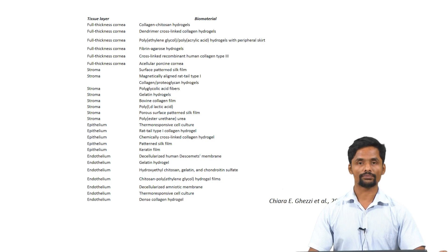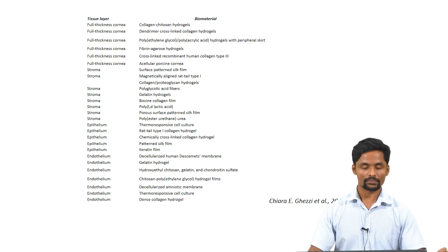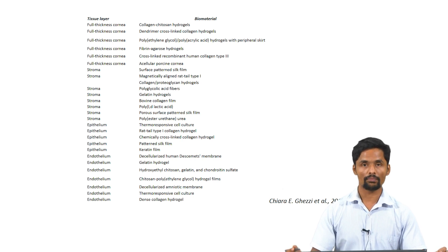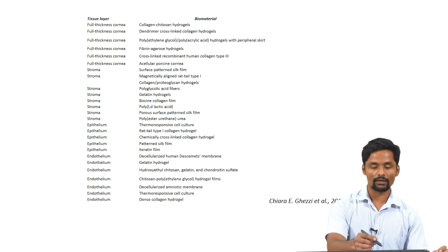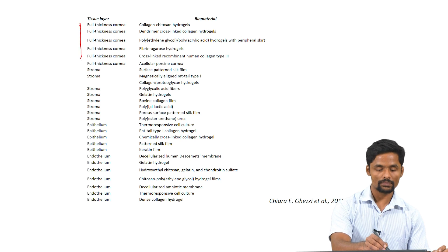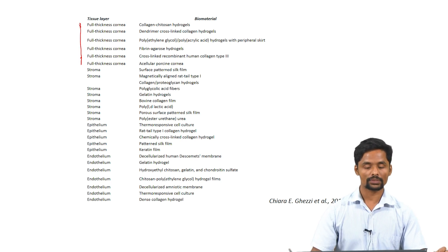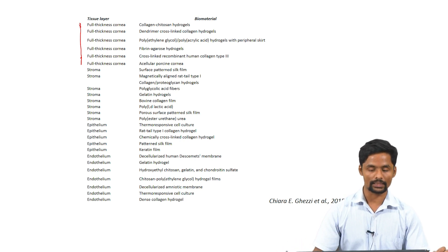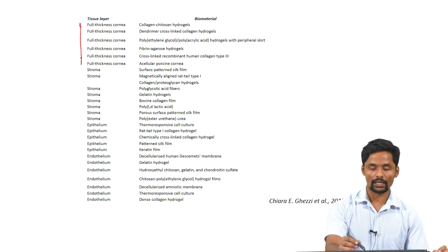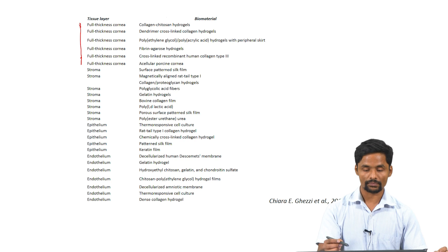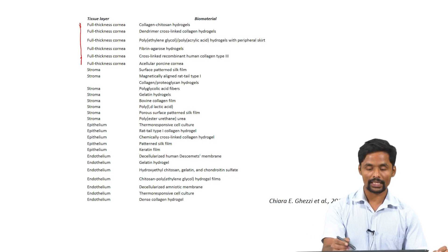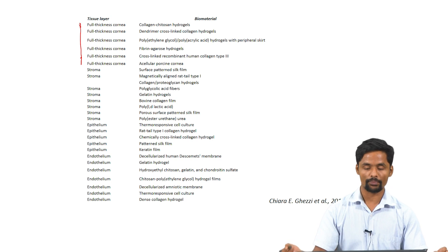Here are a few studies done on various tissue layers of cornea. Full thickness cornea — meaning all five layers of the corneal tissue — has been tried to reconstruct in these studies. For these studies, collagen, chitosan, and synthetic polymers like PEG and polyacrylic acids have been used.